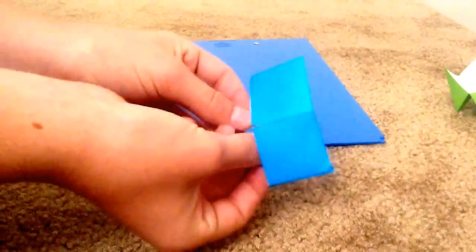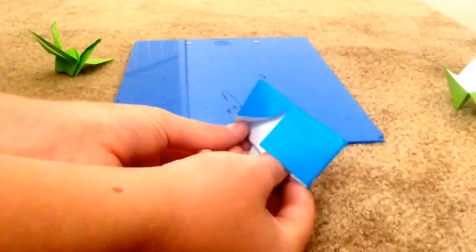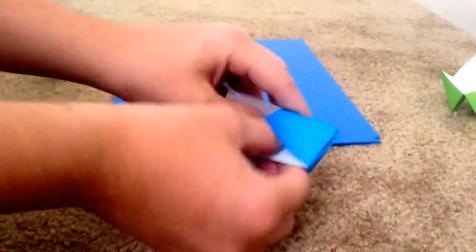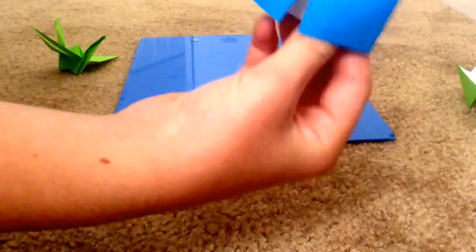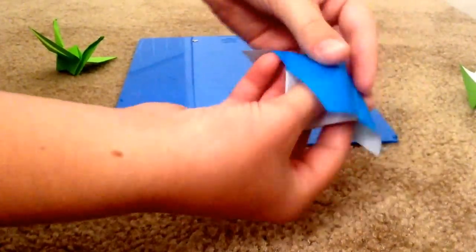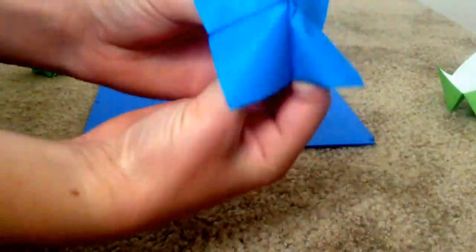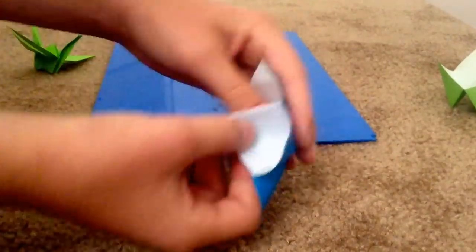Open up the flaps and push into the middle, like so. And there's your cootie catcher slash salt cellar.